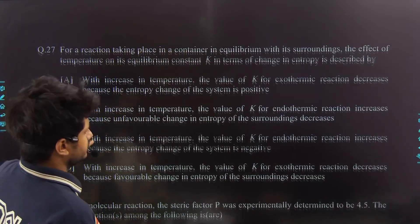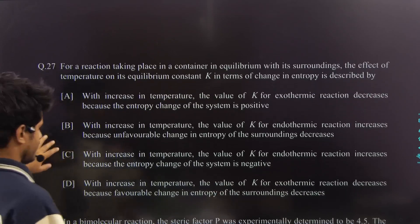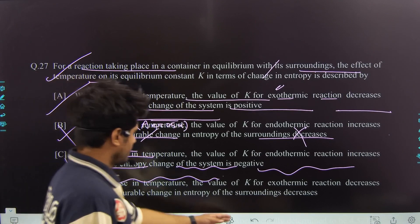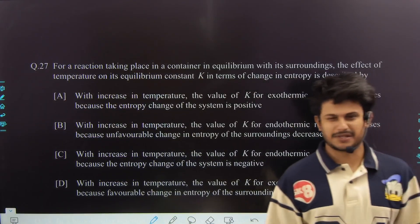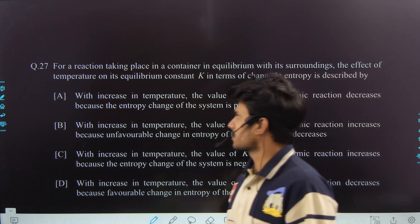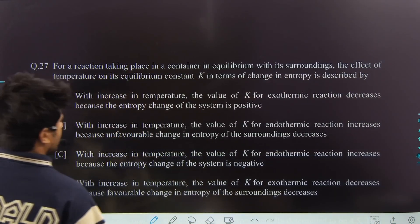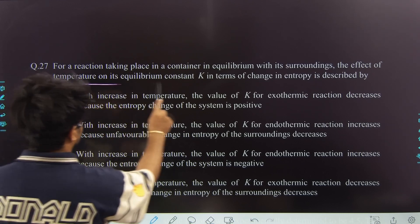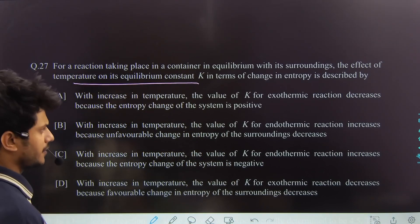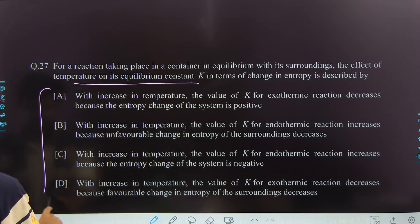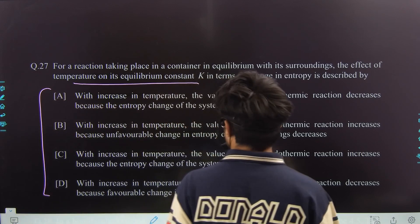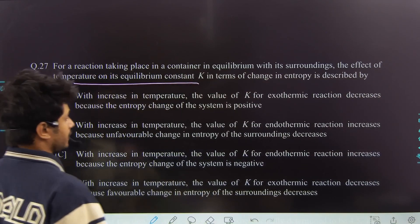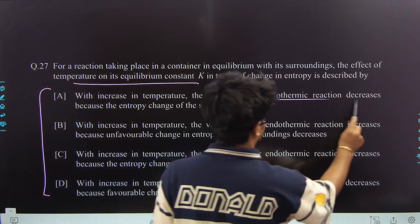Next question — a classic, very good question. It's quite confusing to read and understand. It says: for a reaction taking place in a container in equilibrium with its surroundings, the effect of temperature on its equilibrium constant in terms of change in entropy is described by four statements. First statement: with increase in temperature, the value of K for exothermic reaction decreases.